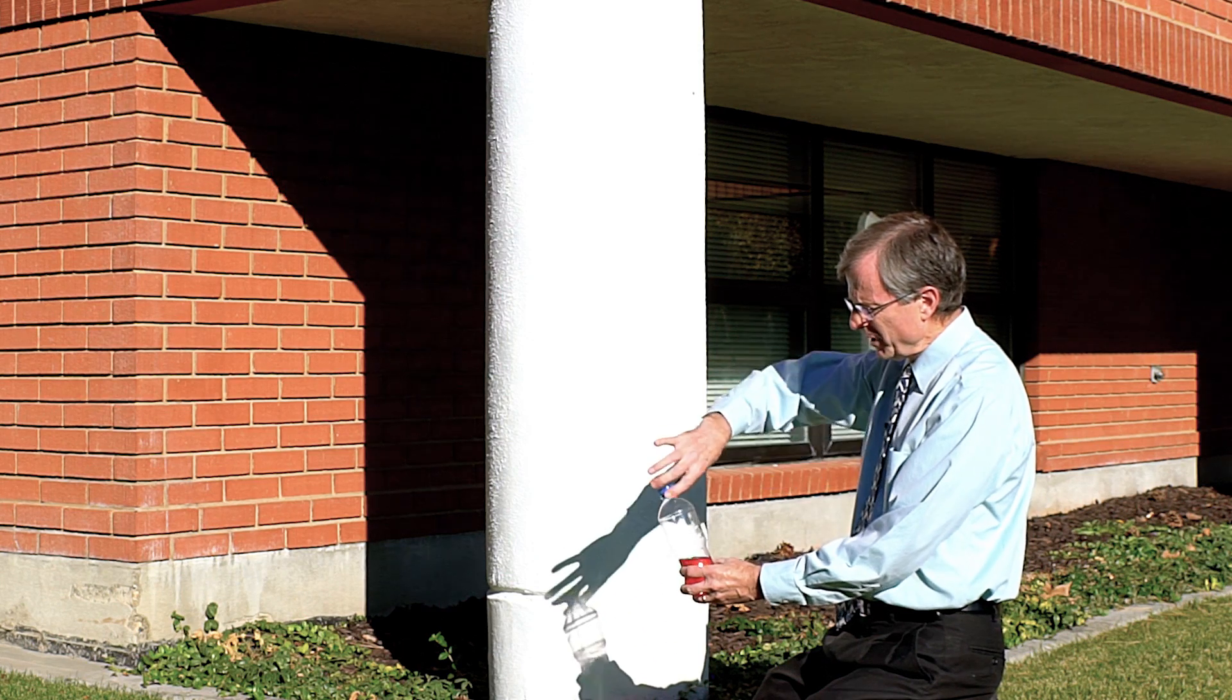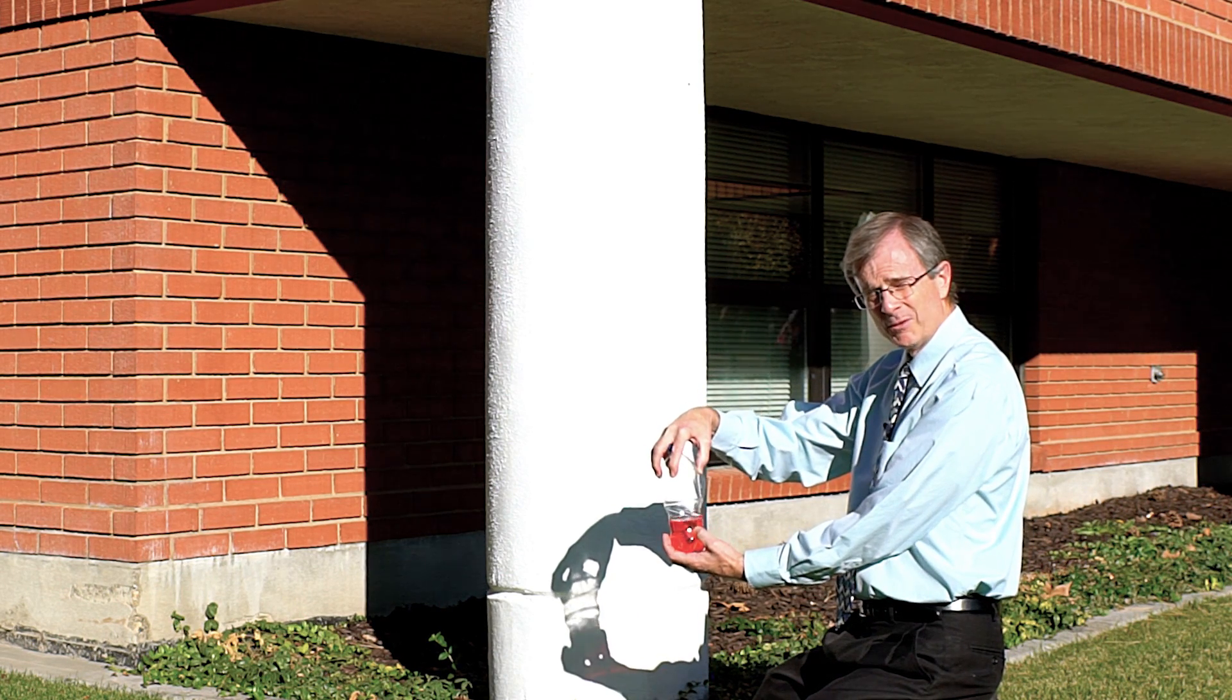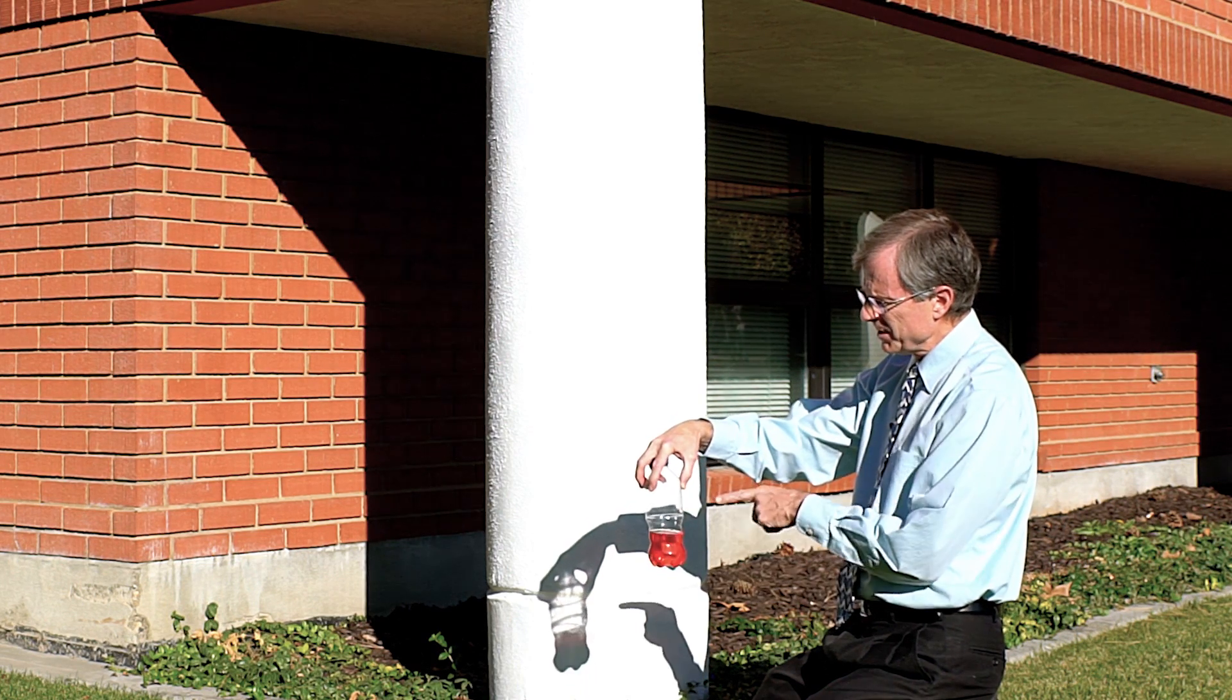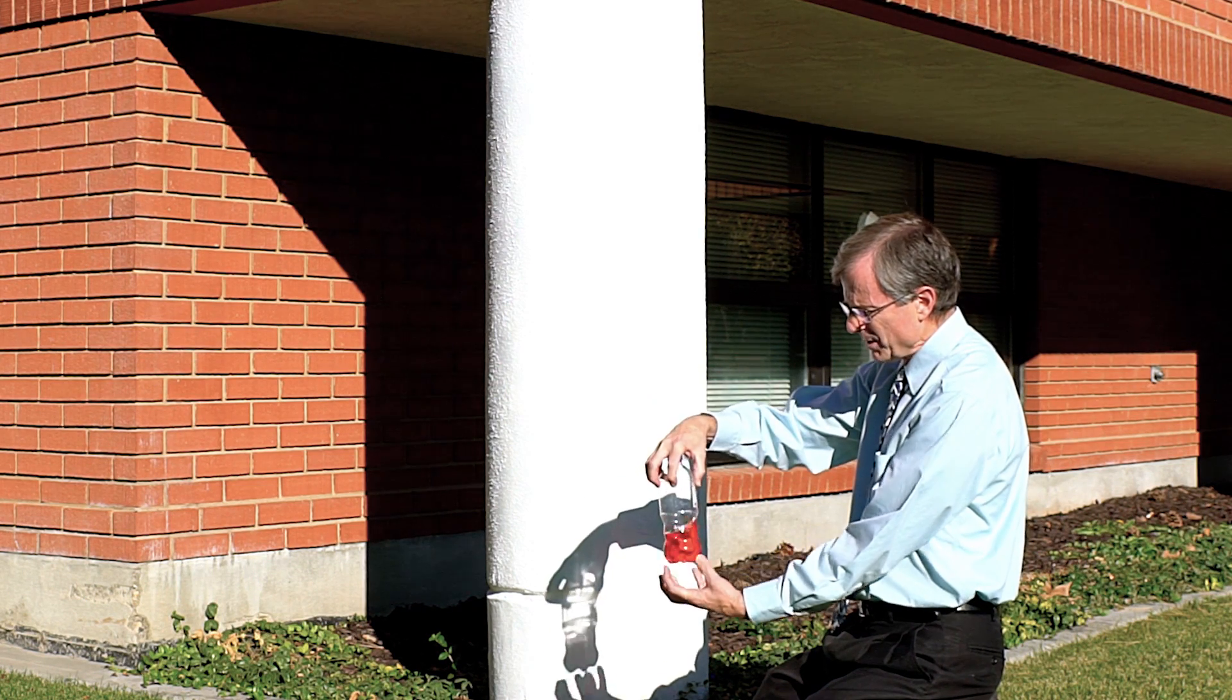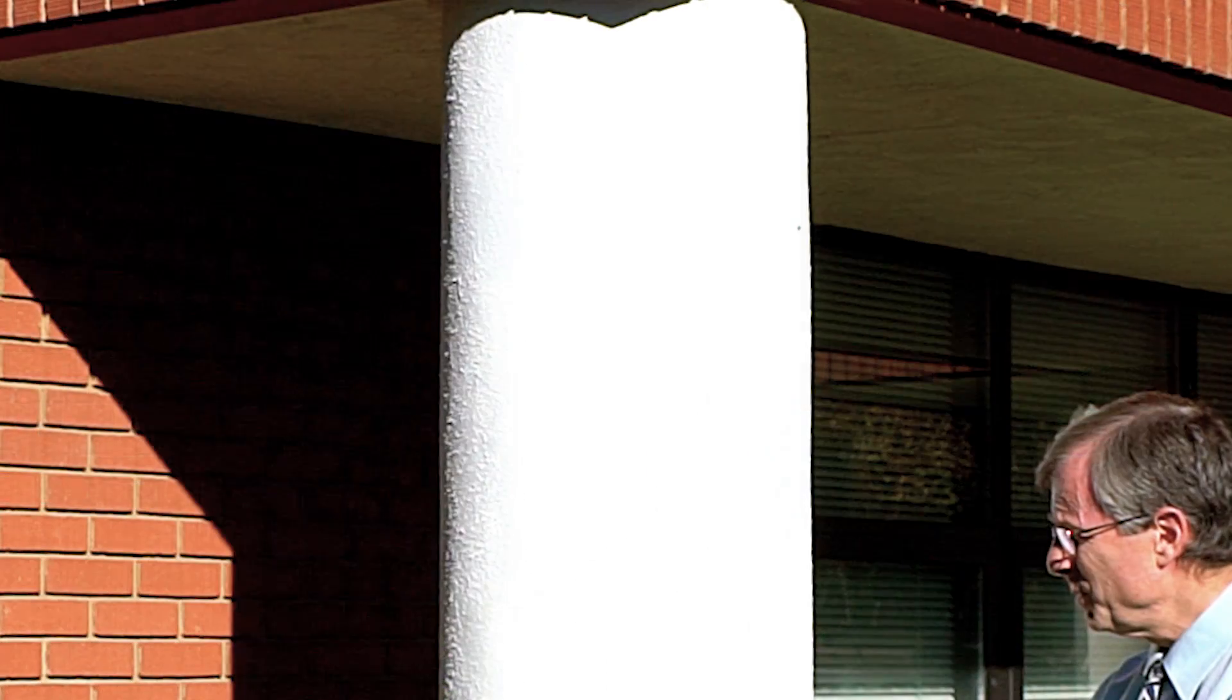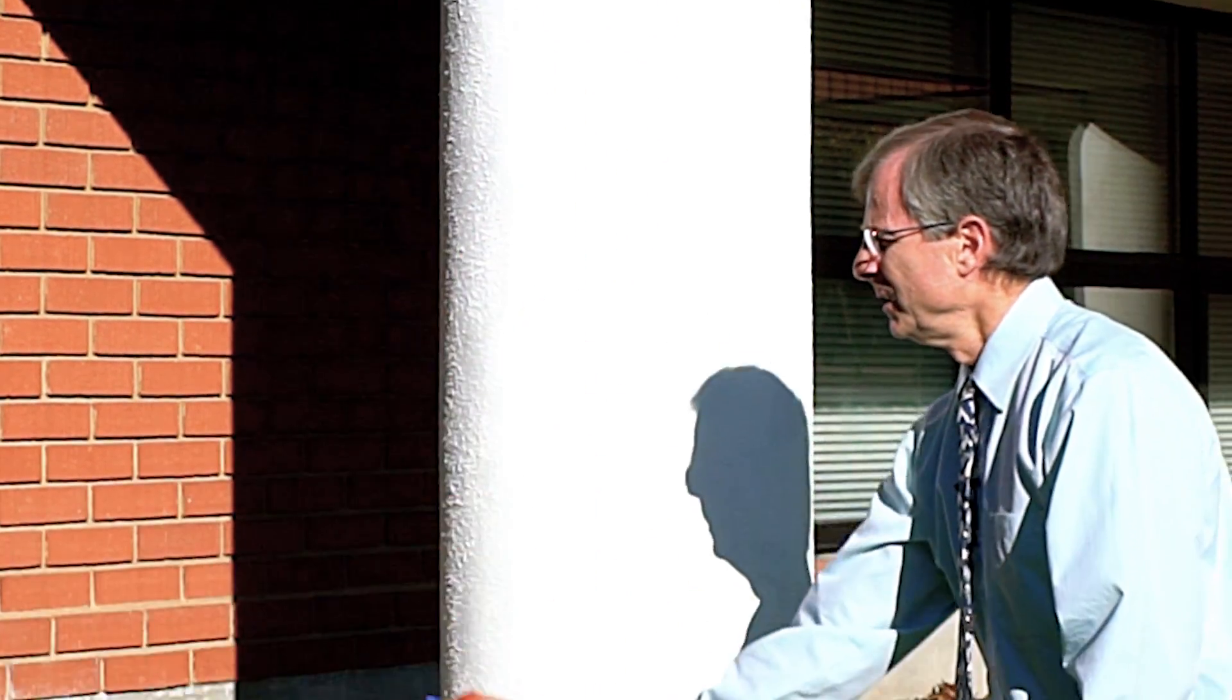But when the water splits and some of the water's here and some of it's here, the moment of inertia is considerably larger because the axis of rotation then will be in the middle of the bottle and you'll have a lot of mass up here and a lot of mass up here. It's farther from the axis of rotation. The moment of inertia is higher and that means that the angular velocity must be lower.